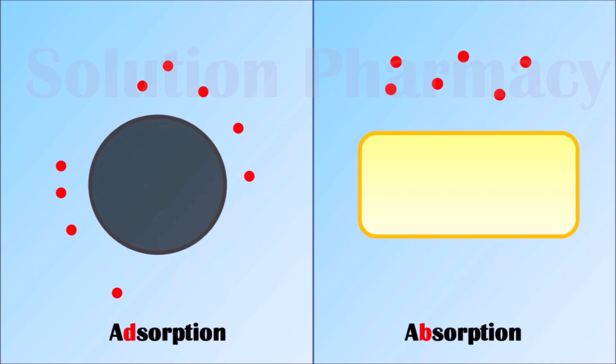The substance on whose surface the adsorption process takes place is called the adsorbent. Adsorbents are finely divided solid particles — fine powders — for example silica gel and activated charcoal. The molecules which stick or adsorb onto the surface of the adsorbent are called the adsorbate.